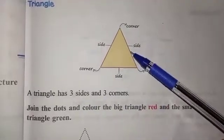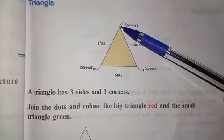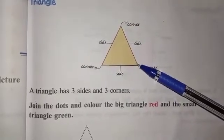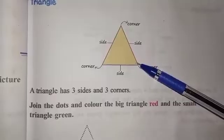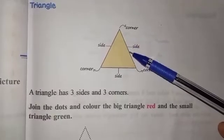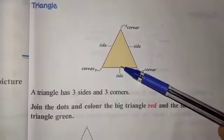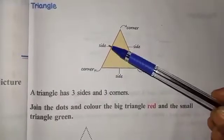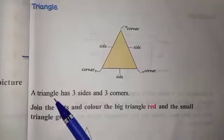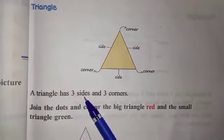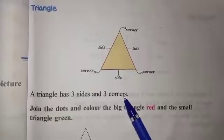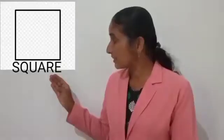Look at the picture. Corner 1, corner 2 and corner 3 — so a triangle has three corners. And the sides: side 1, side 2 and side 3. So a triangle has three sides and three corners.